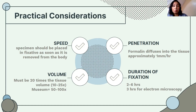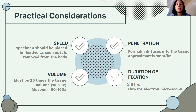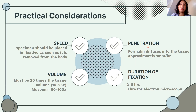Penetration: formaldehyde diffuses into tissue approximately 1 mm per hour. For very large organs, it will take many hours for complete fixation. Pathologists cut tissue into smaller pieces — 1 to 2 mm size — so the formaldehyde penetrates more easily. If the biopsy is small or in small fragments, a few hours is sufficient; if too large, it could take days.